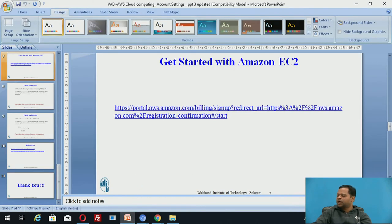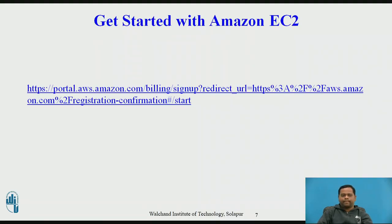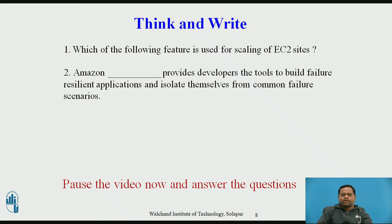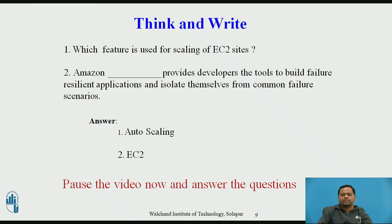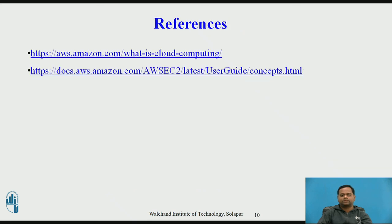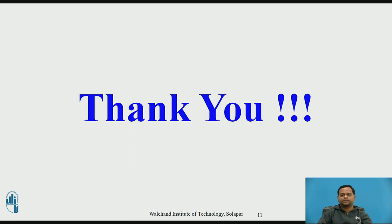So this is how we have created EC2 instances. Pause this video and answer these questions: Which of the following features is used for scaling of EC2? Second, Amazon EC2 provides developers tools to build failure-resilient applications and isolate themselves from common failure scenarios. The first answer is auto scaling; the second answer is EC2. These are the references used to create this video. Thank you.